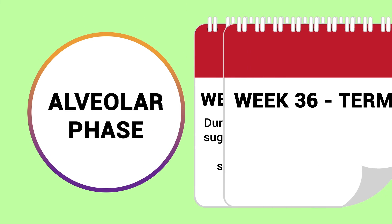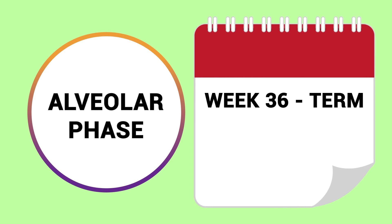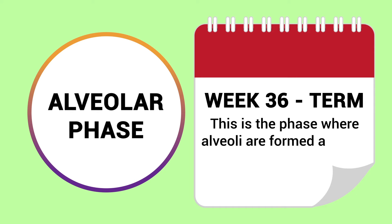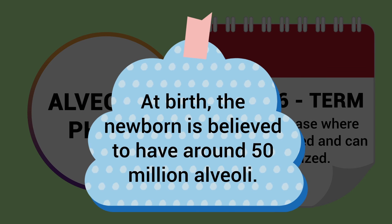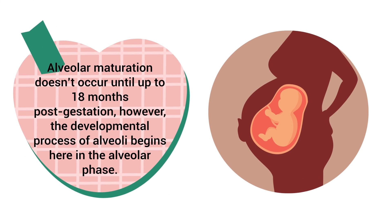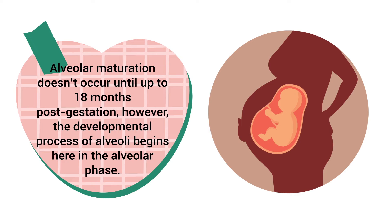Finally, the alveolar phase occurs from week 36 to term. This is the phase where alveoli are formed and can be recognized at birth. The newborn is believed to have around 50 million alveoli. Keep in mind that alveolar maturation doesn't occur until up to 18 months post-gestation; however, the developmental process of alveoli begins here in the alveolar phase.